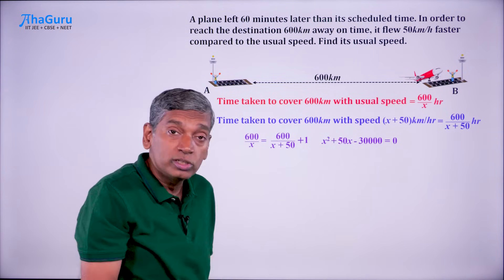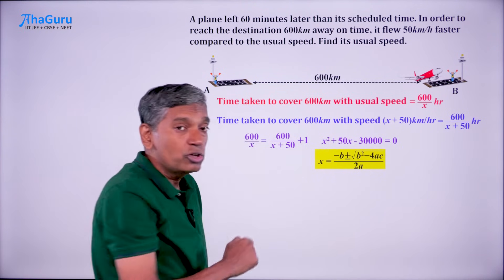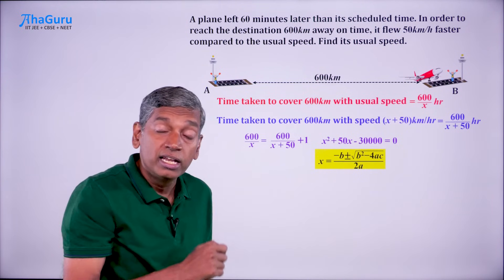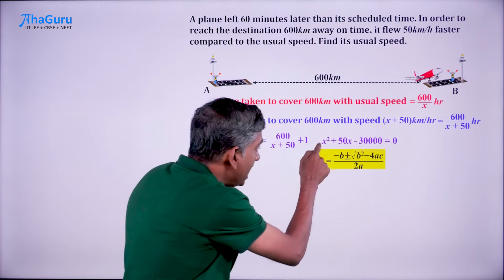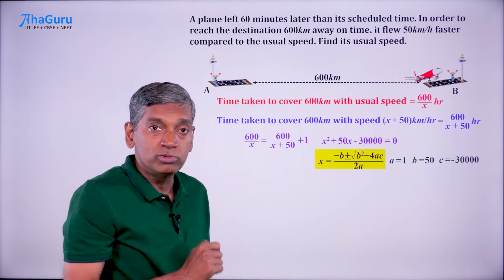We know that the solution to this equation is x equals minus b plus or minus root b square minus 4ac, the whole by 2a. What are the a, b, c here? A is 1, b is 50 and c is minus 30,000.